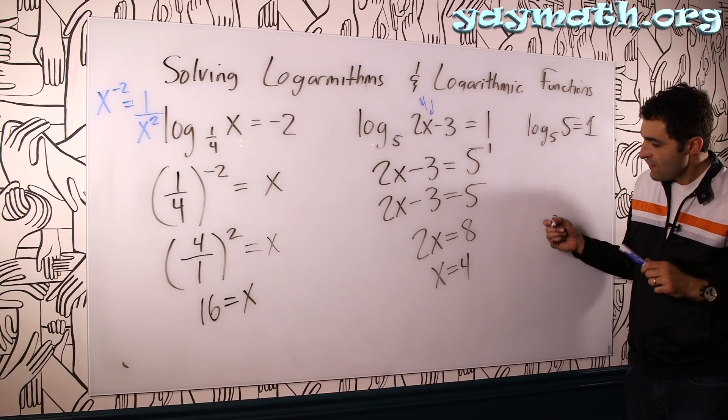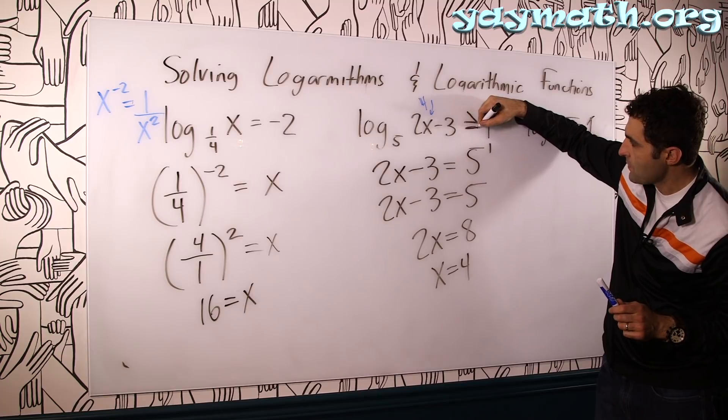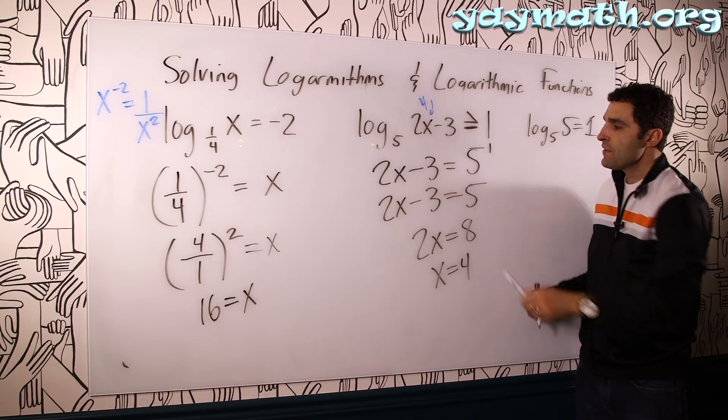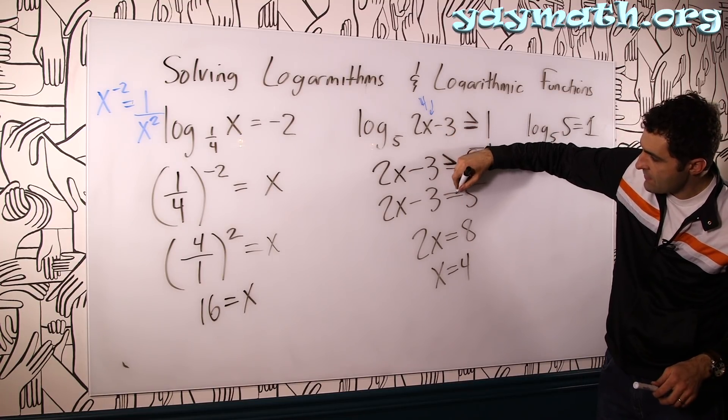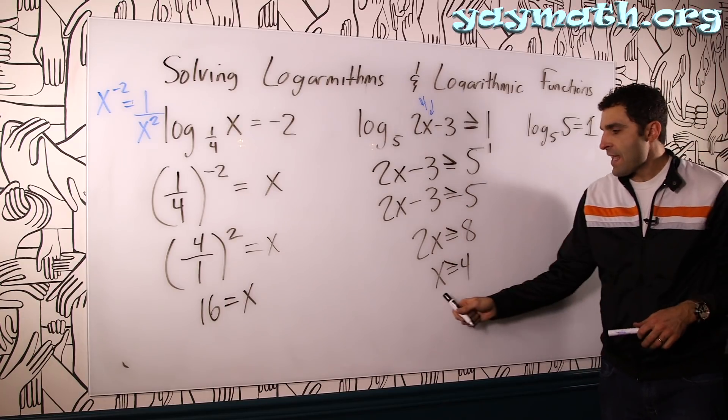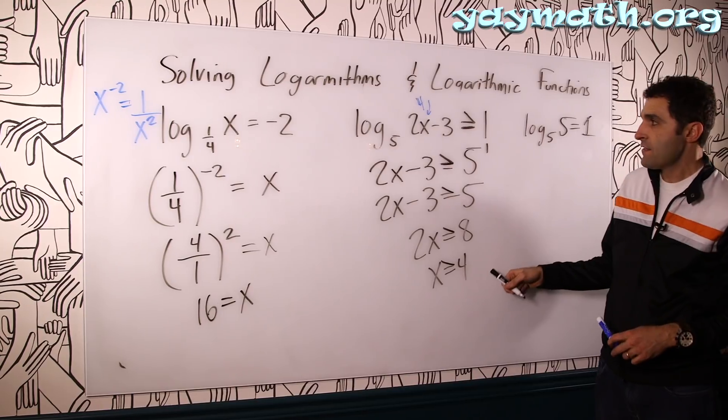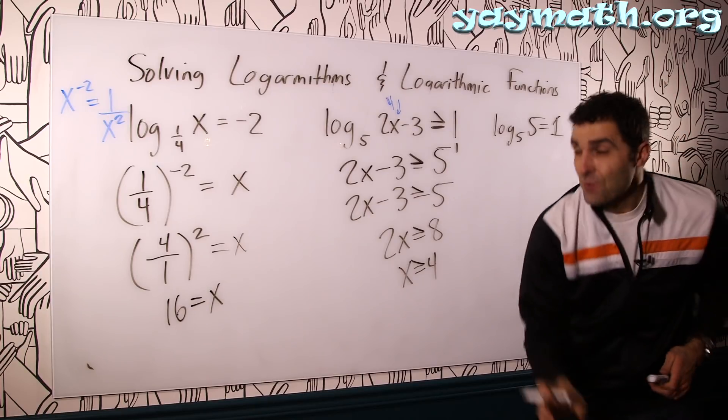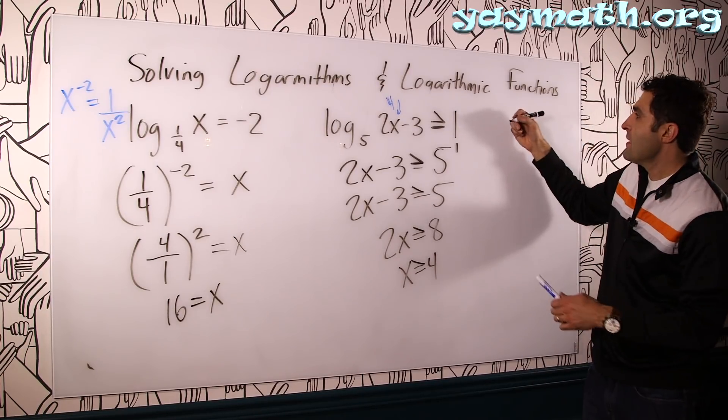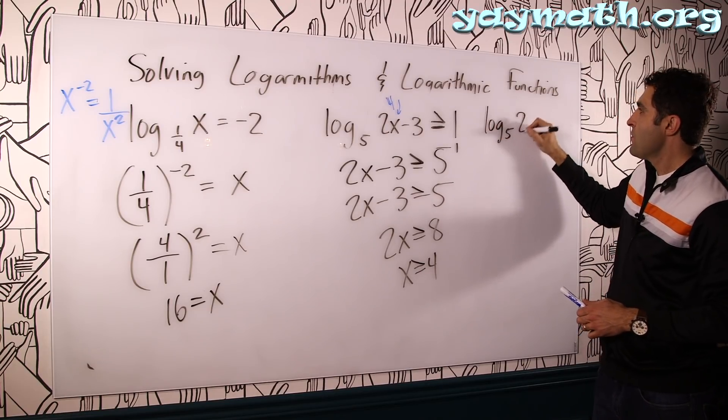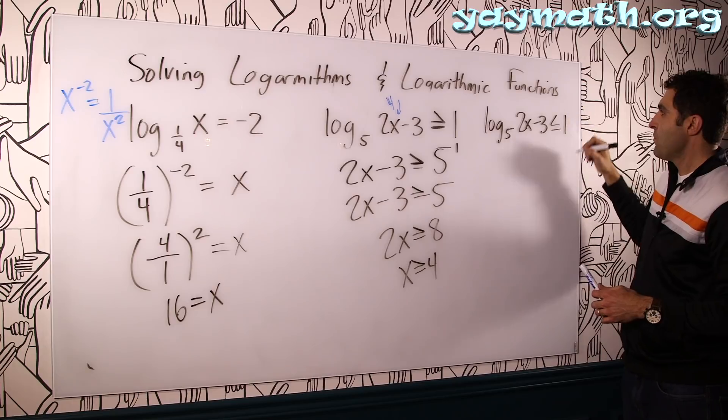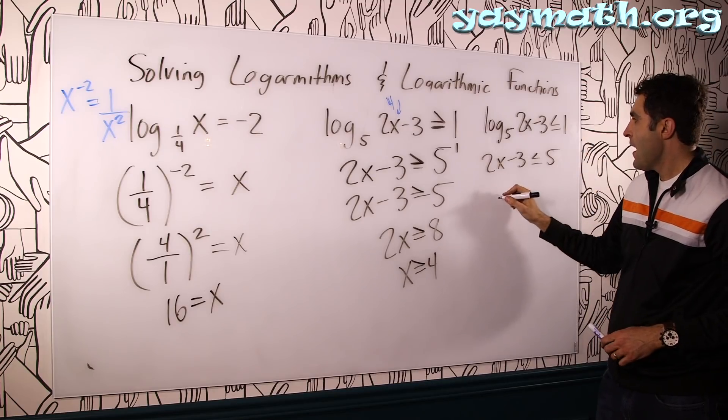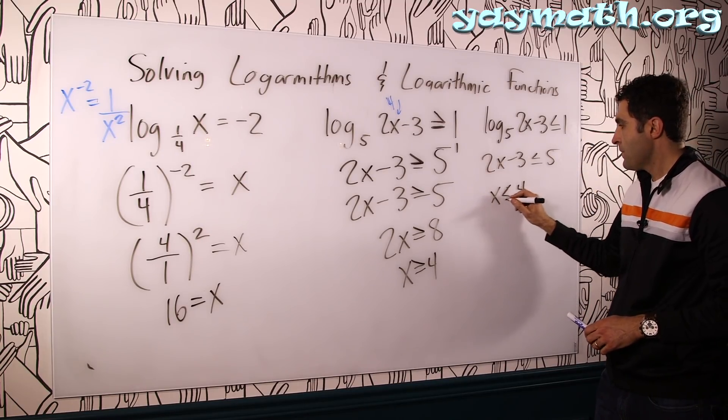Sometimes they increase the difficulty and they go something like this, if it's greater than or equal to 1. If that's the case, make sure that the 2x minus 3, the number, is the thing that's greater. So all this is now greater, greater, greater. That means x is greater than or equal to 4 in this case. Not just x equals 4. And then, if it was less than, we have an amazing discovery. Let's say it was log base 5, 2x minus 3 is less than or equal to 1. We'll still solve this thing. 2x minus 3 is less than or equal to 5. And you get x is less than or equal to 4.